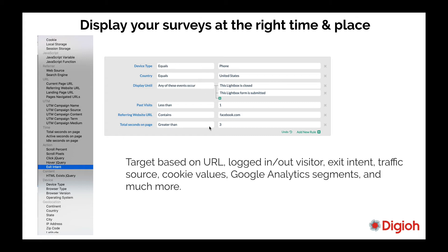You can set up customized rules and display the survey exactly when you want to. For example, it can be on a phone device — we can do device detection — or based on if they're coming in from ad traffic, like Facebook, and leaving the page without making a purchase. You can ask them why they're leaving, and what you can do better for them.